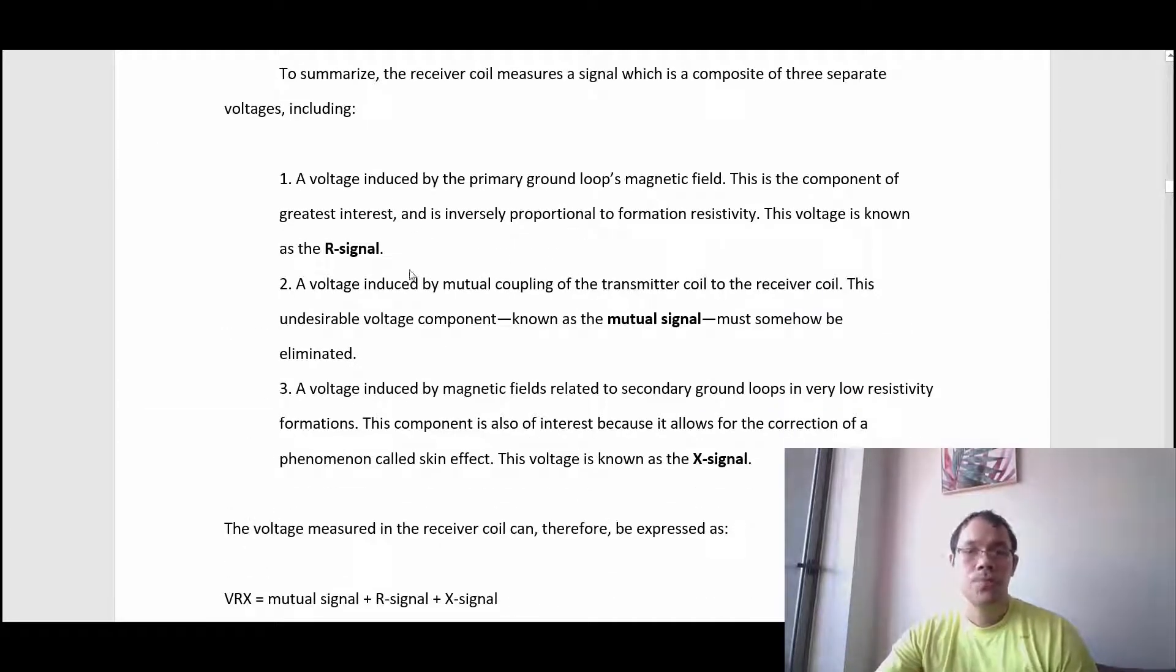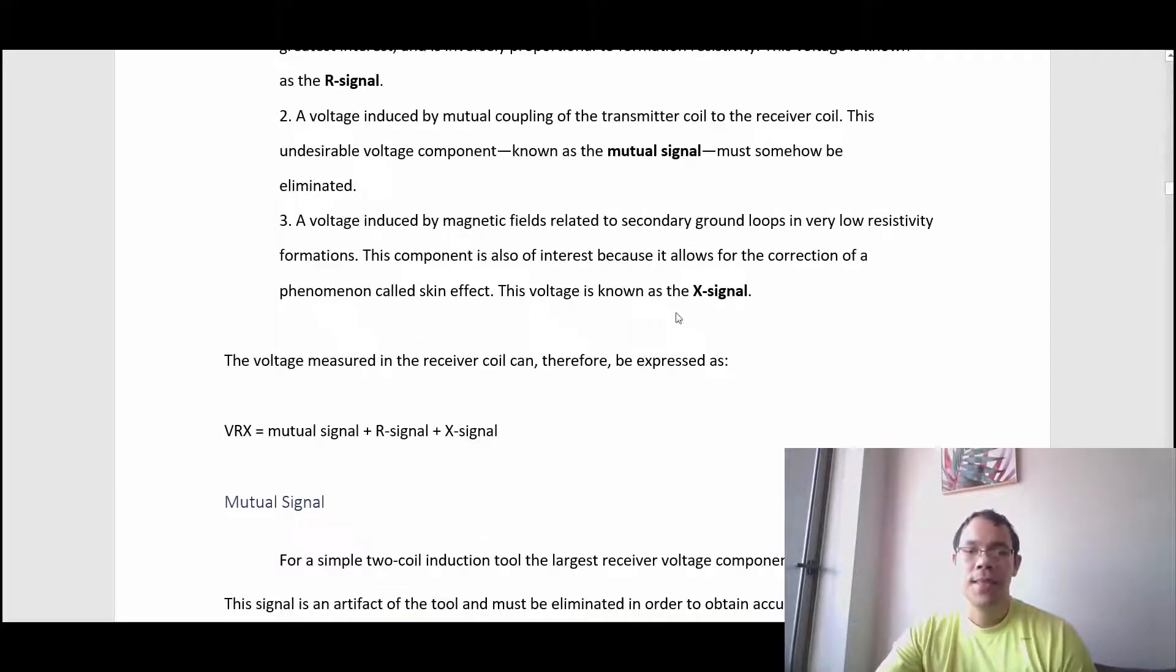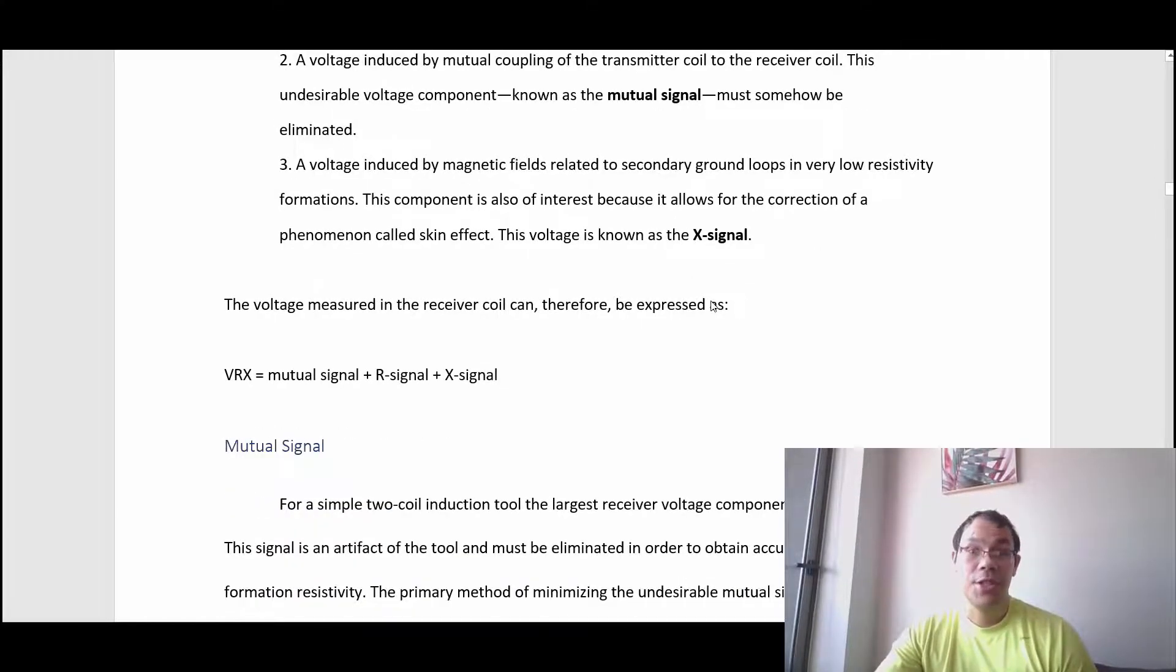So in short, you've got R signals, which are the good ones that truly represent your formation. You've got mutual signals, which is let's call it noise or signals that are caused by the interference of your transmitter into your receiver. And the X signals, which are generated in low resistivity formations.